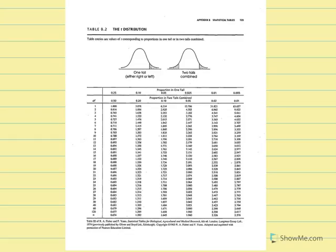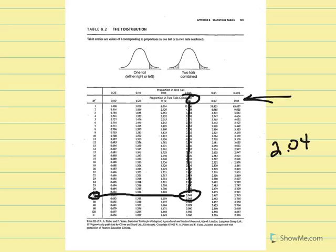In the t distribution, with degrees of freedom equal to 28 and a two-tailed test at 5%, we find where those two things intersect and get a critical t equal to plus or minus 2.048.